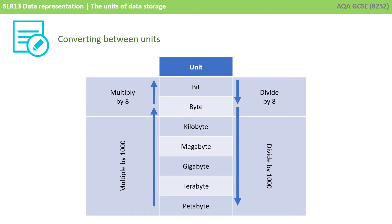Often in exams, you have to convert from one unit to another. For example, a 500 gigabyte SSD is 0.5 or half a terabyte. It is also 500,000 megabytes. To convert between the units, it's handy to remember you either multiply or divide by 1,000. Remember that a byte is 8 bits, so if you need an answer in bits, you need to multiply by 8.